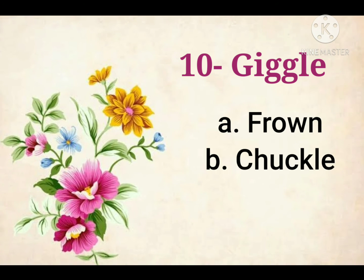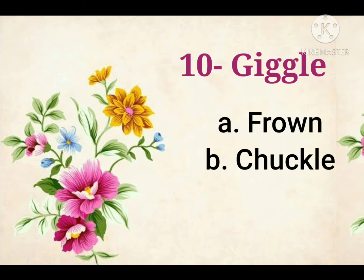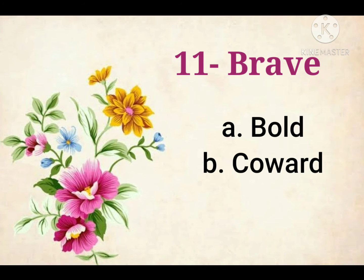Tenth is Giggle. Giggle means to laugh lightly. So the opposite of Giggle is Frown. Eleventh is Brave. Brave means Fearless. So the opposite will be Coward.